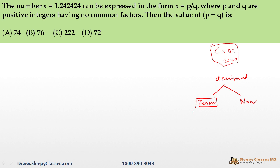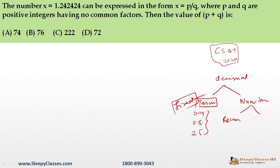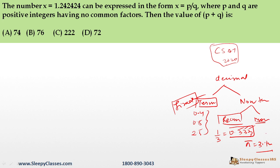Non-terminating decimals continue infinitely. For example, 0.33333... goes to infinite terms — it doesn't terminate but it does recur, with 3 repeating. That is non-terminating recurring. Then there is non-terminating and non-recurring, like pi (3.14159...) where every digit is different and it never ends and never repeats. Rational numbers can be written in p/q form. Terminating and recurring decimals are rational numbers. Non-terminating non-recurring decimals, like pi, cannot be written in p/q form.